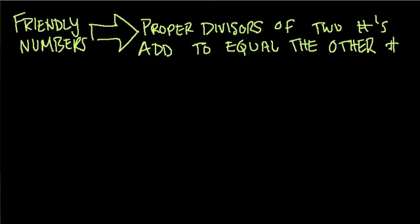Okay, in this video we're looking at friendly numbers. That means we have two or more numbers and the proper divisors of each number add them up to get the other number. And let me show you what I mean.